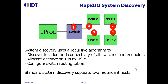The RapidIO system discovery algorithm is a simple recursive algorithm. For example, the microprocessor first determines it's connected to a switch, then checks each switch port using standard registers to determine what it's connected to. Device IDs are allocated to connected devices and the switch routing tables are updated. The memory map does not need to be determined at this point because RapidIO routes packets based on device ID and not on address, which allows RapidIO to support any system topology.